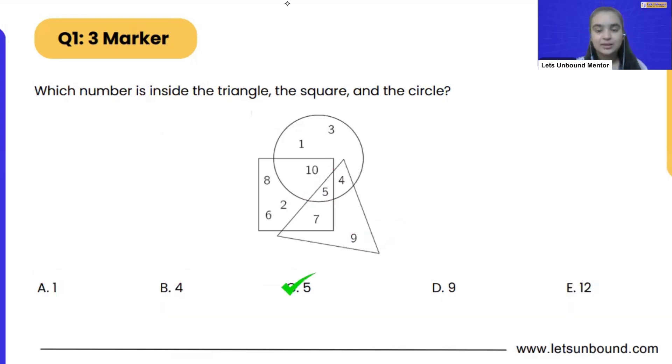So let me tell you method number 2 as well. What you can do is first of all, 12 is not in the list. But we can see that in circle, we are having numbers 1, 3, 4, 5 and 10. 1, 3, 4, 5 and 10 inside this circle.